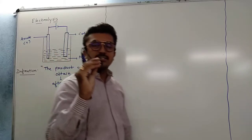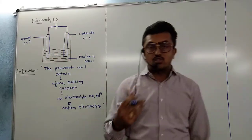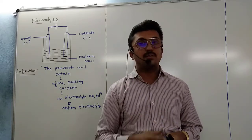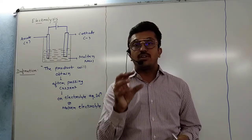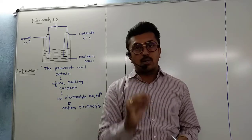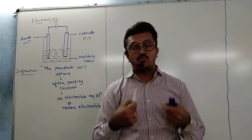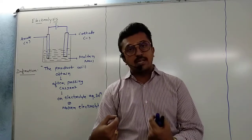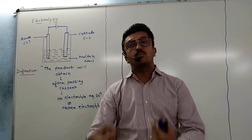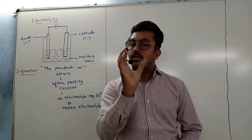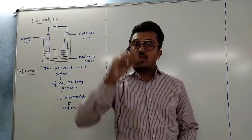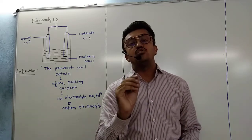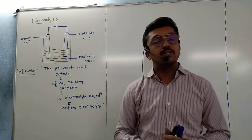When we pass a current through an electrolyte solution, the question arises: what is an electrolyte? A compound that has positive and negative ions — if the compound is polar, then it is an electrolyte. In simple words, if a compound has positive and negative ions, then it is known as an electrolyte compound.